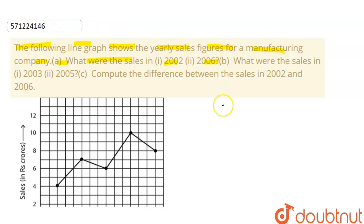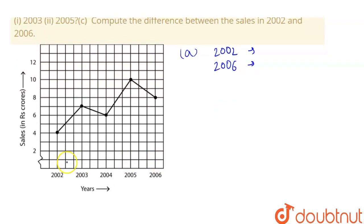Okay, so let's start with the first part. Part A is sales in 2002 and 2006. So sales were, see, in 2002 they were 4 crores, and in 2006 they were, you can see, this is 8 crores.